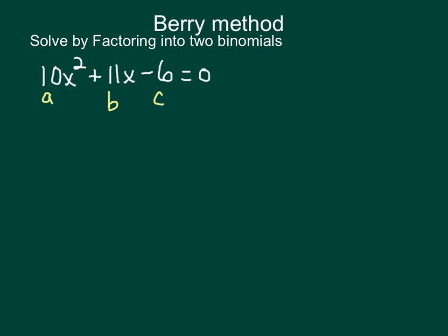With the Berry method, we want to multiply our a times c. a times c in this case would be negative 60.